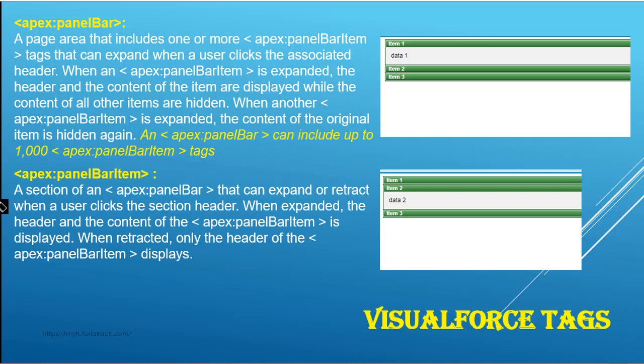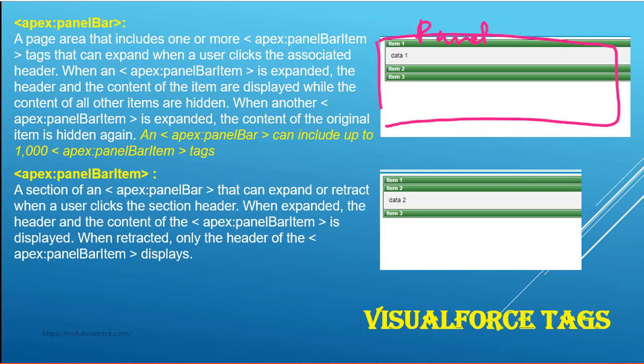So let's say it created item 1, item 2, and item 3 inside of this panel bar. The whole thing is a panel bar, and inside of it you have added multiple items — this is a panel bar item, this is a panel bar item, and this is a panel bar item. The property of this panel bar is that when you click on an item inside of it, that item will expand and display its content. So once you click on item 1, it will expand and display the content of that item.